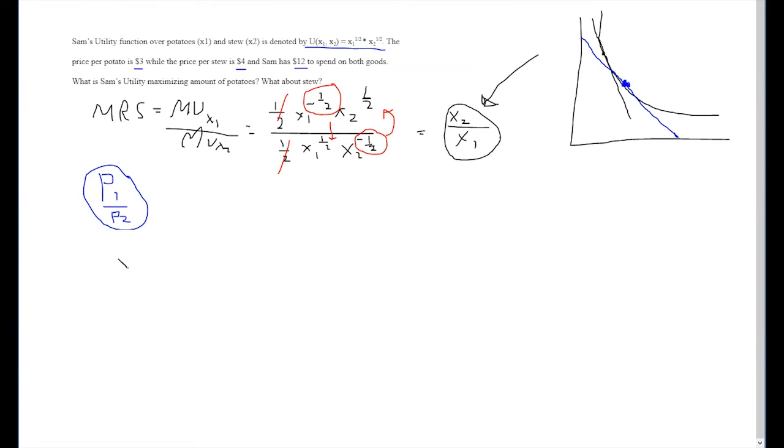So we'll be left with x2 over x1 equals p1 over p2. Fortunately, in the question, we're given price of good 1 and price of good 2. So we can say x2 over x1 is equal to 3 over 4.